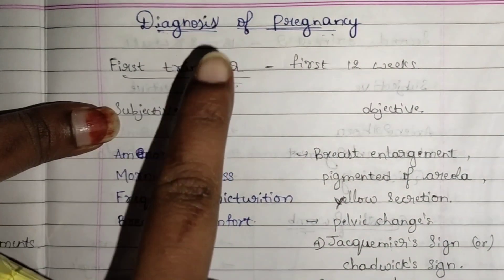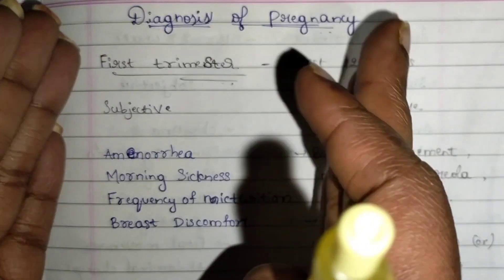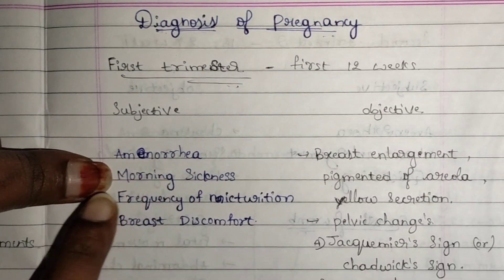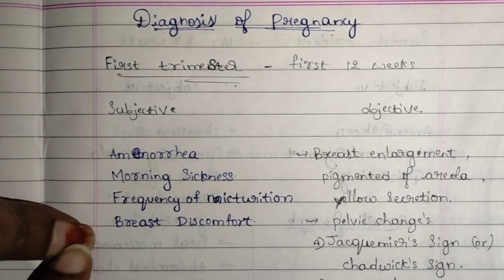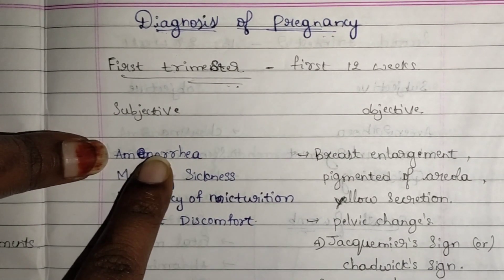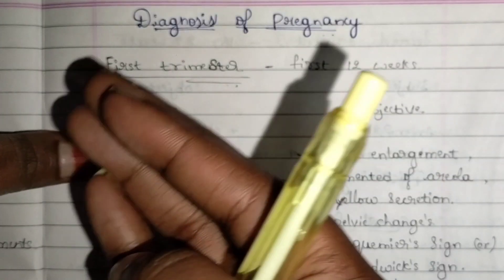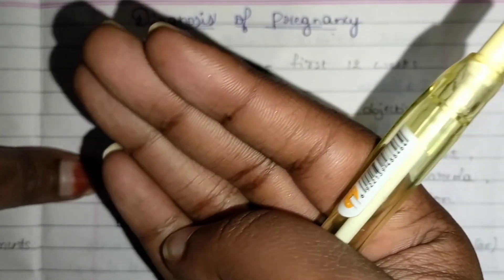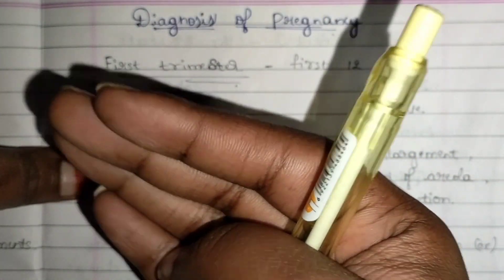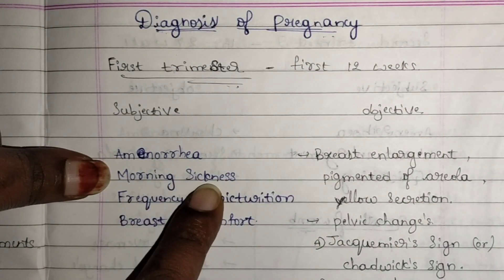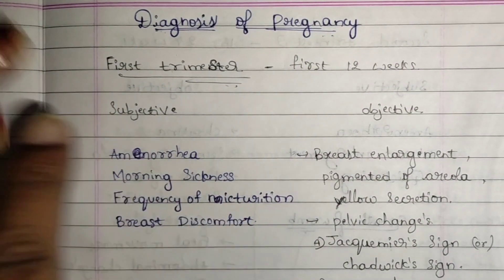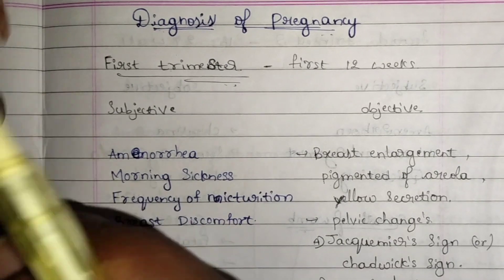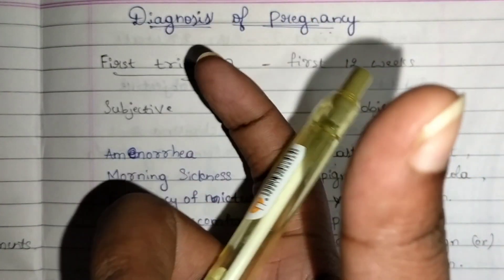From conception till three months, women have a few complaints: amenorrhea (absence of menstruation), morning sickness (nausea and vomiting at the early morning on an empty stomach, due to increased hormones), frequency of micturition (frequency of urination), and breast discomfort due to enlargement of the breasts.